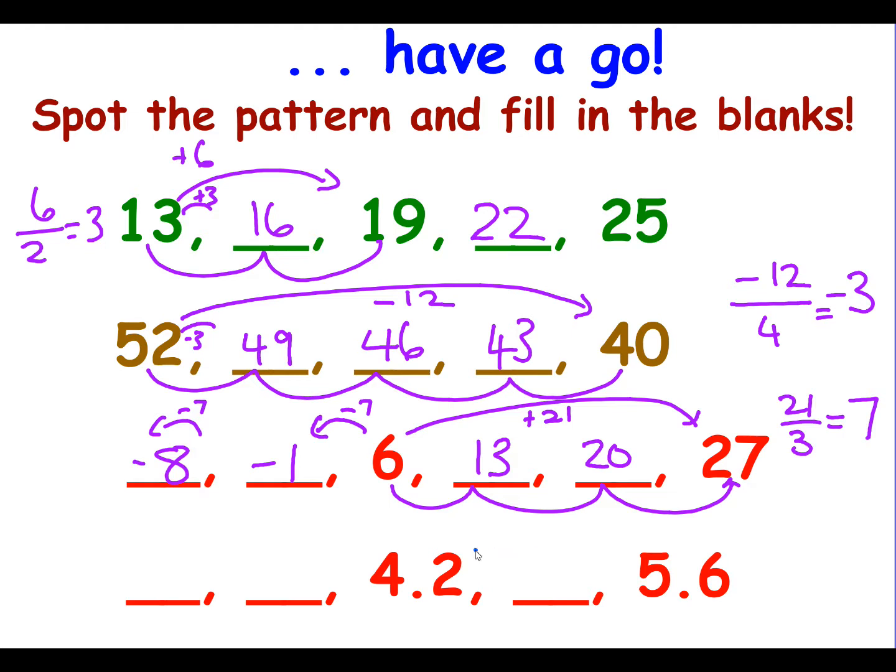And the final one. We have a gap of 1.4 and it's going up. So it's positive 1.4 is the gap. And we have 2 steps. So each step is 0.7. So to fill in this one here, we need to add 0.7. So we end up with 4.9. But now, because we're going backwards, instead of adding 0.7, we need to subtract 0.7. So you end up with 3.5. And again, we need to subtract 0.7. So you end up with 2.8.